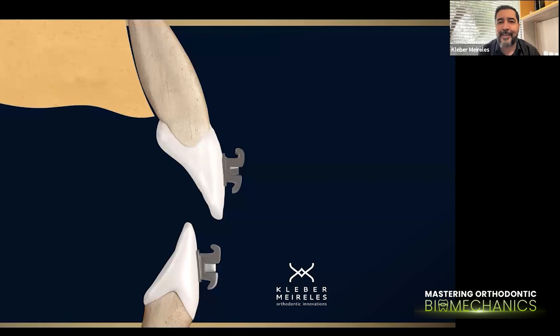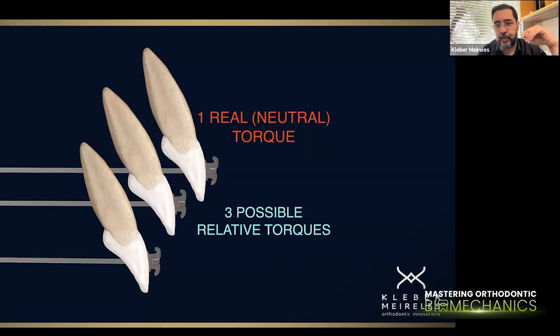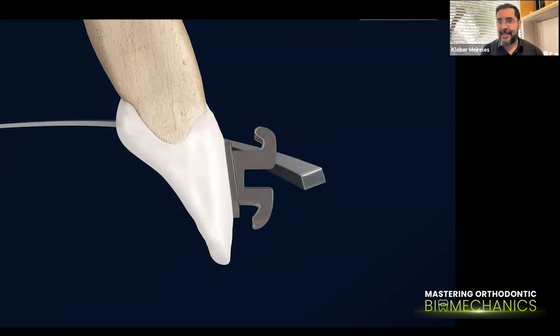Correcting inclination and the Class II at the same time means you're inserting two moments in the same direction — but let's move on. As you can see, one real torque may be represented as three different relative torques. This is what we are going to have if we don't understand this important relationship. Now I'd like to ask one question: will a positive real torque always be a positive relative crown torque?